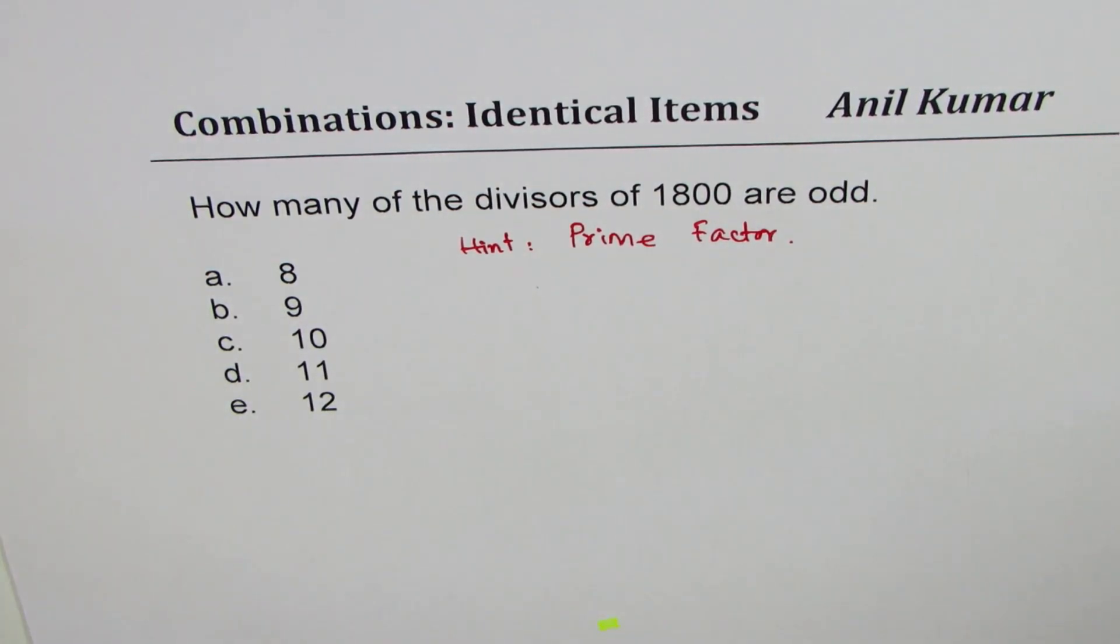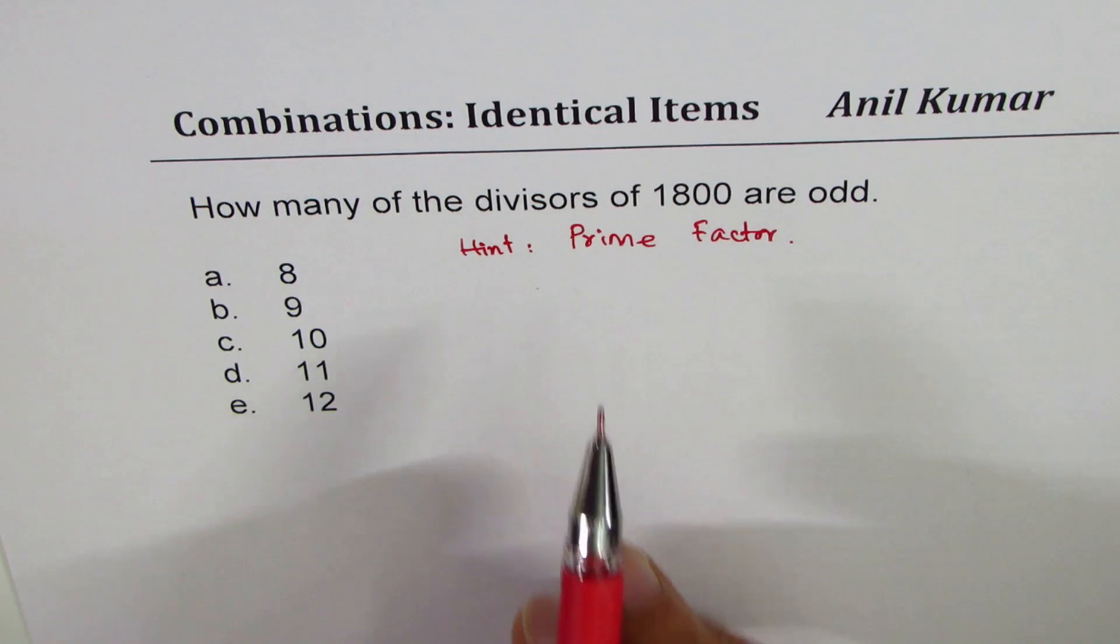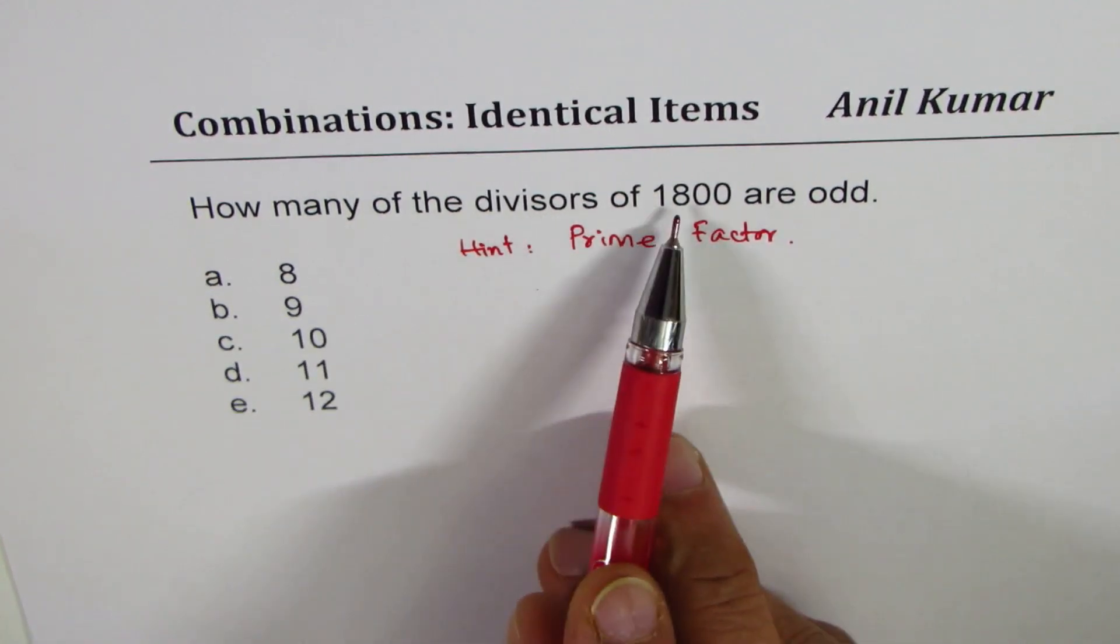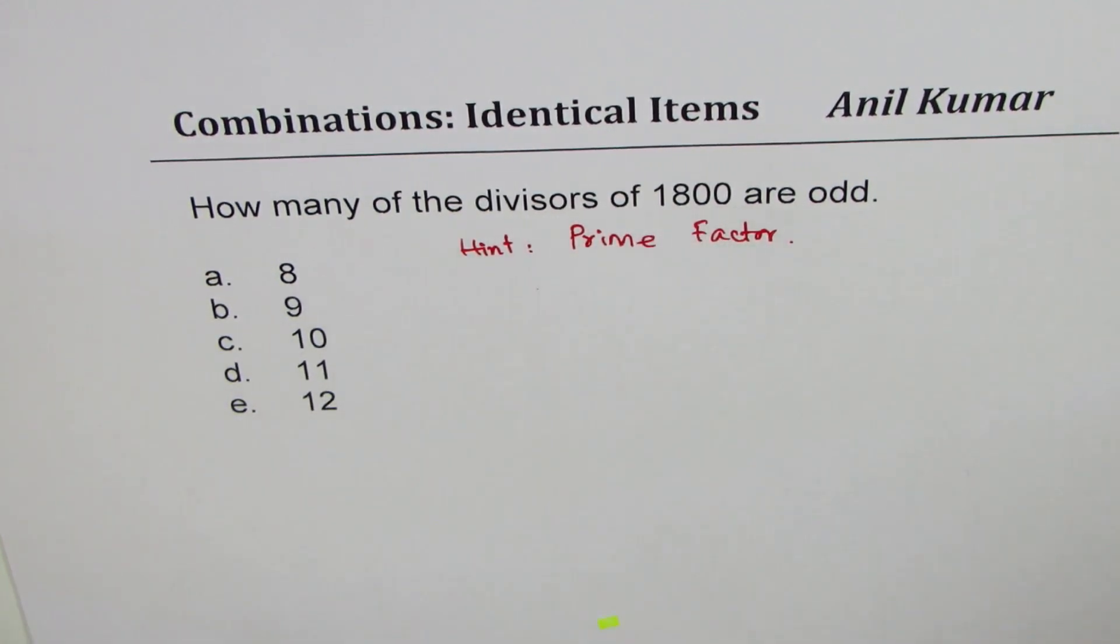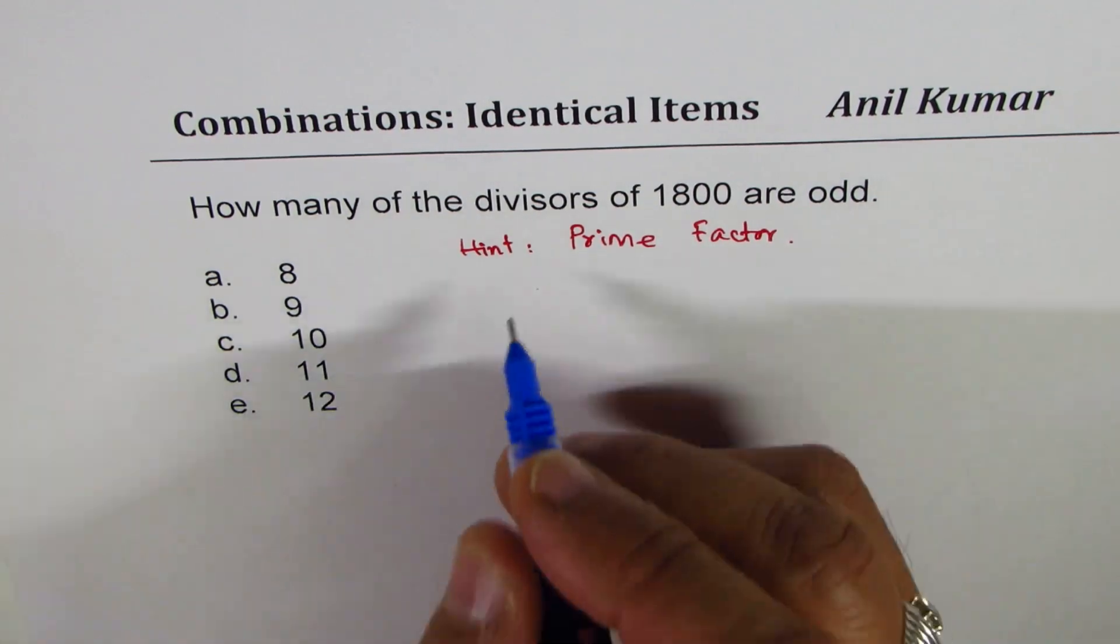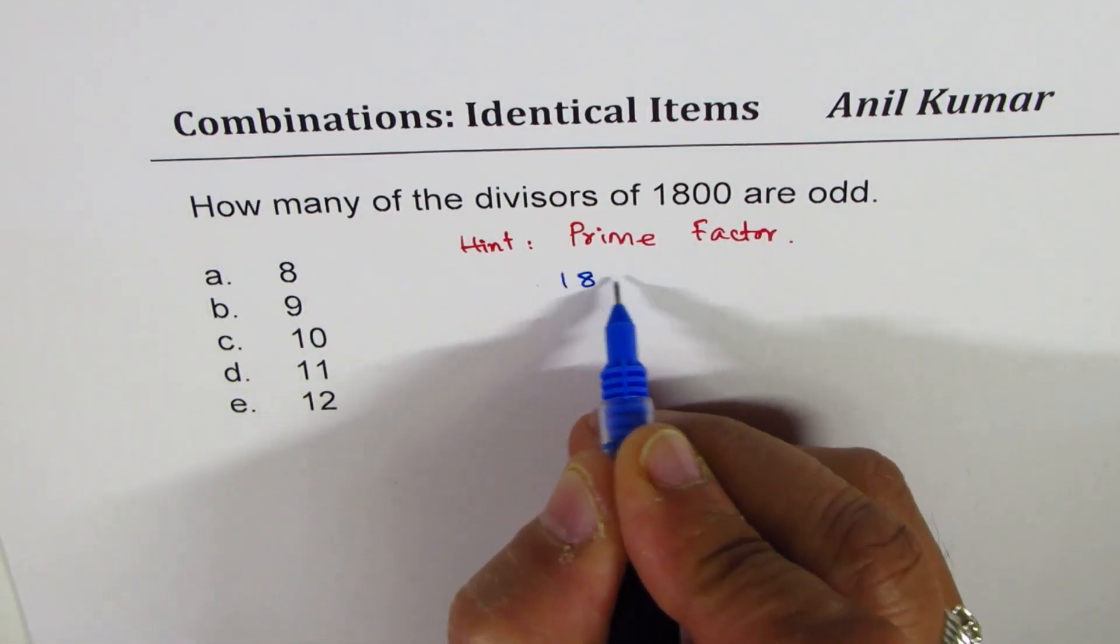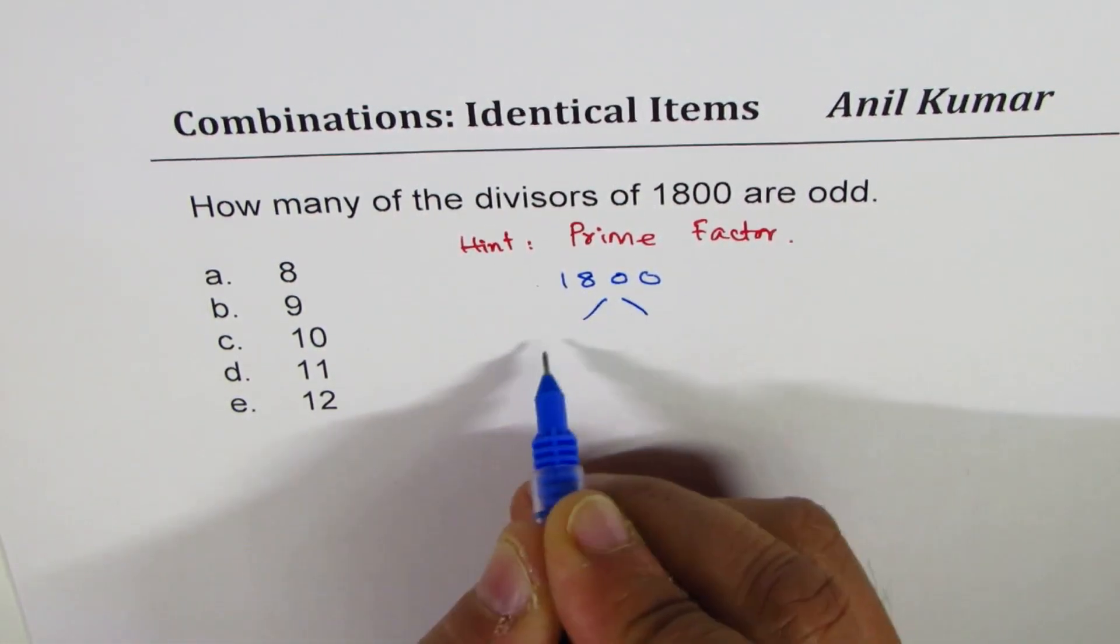Again, whenever you feel like, you can pause the video, answer the question, and then look into my suggestions. So all the factors are divisors of 1800, so let's find out the factors of 1800.